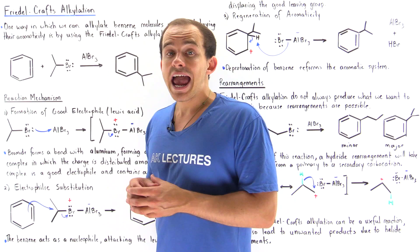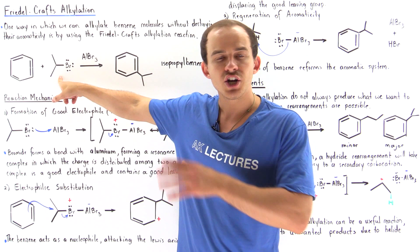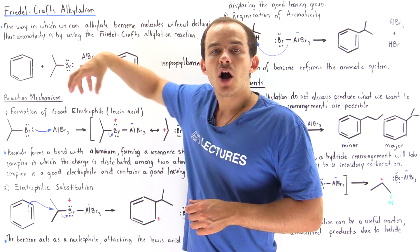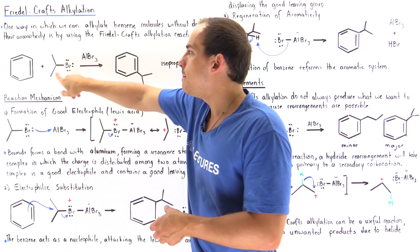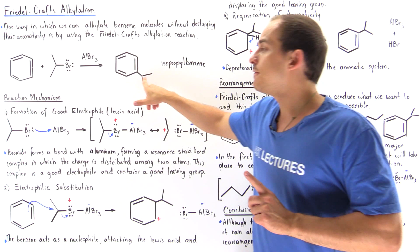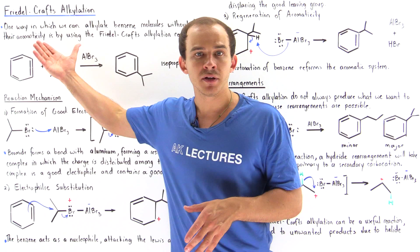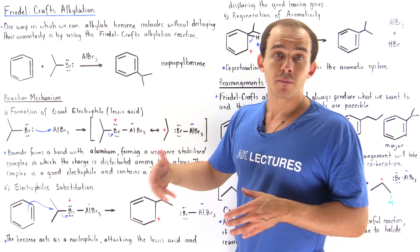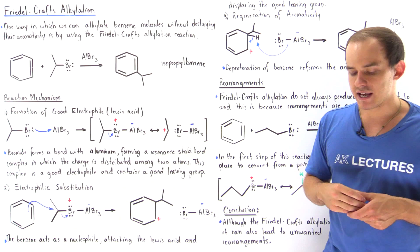If we take a benzene molecule and mix it into a solution that contains isopropyl bromide, no reaction actually takes place. However, if we add a little bit of a catalyst — for example, aluminum bromide — our reaction does take place. Mixing the catalyst with isopropyl bromide and benzene, we get isopropyl benzene as the product. If we replace the isopropyl group with some arbitrary hydrocarbon R group, this is the general form of the Friedel-Crafts alkylation reaction.